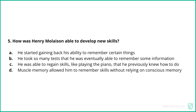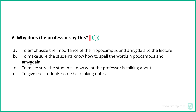Question 5: How is Henry Mollison able to develop new skills? Question 6: Why does the professor say this? 'In an attempt to control his seizures, H.M. underwent brain surgery to remove very important pieces of his brain — his hippocampus and his amygdala. I'll put that on the board here.'